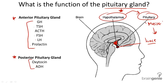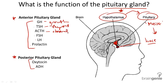The functions of these hormones vary. Growth hormone promotes bone growth, especially during childhood and adolescence. Thyroid stimulating hormone stimulates the thyroid to secrete thyroid hormones, regulating metabolism. Adrenocorticotropic hormone stimulates the adrenal cortex to secrete hormones.